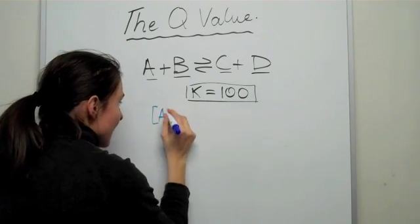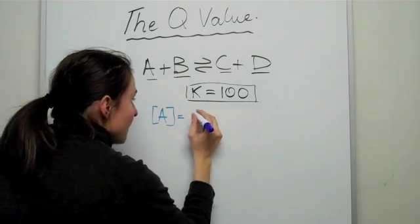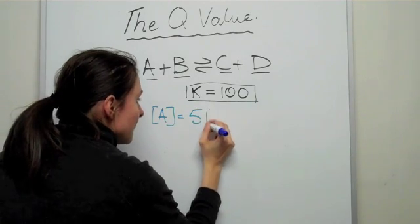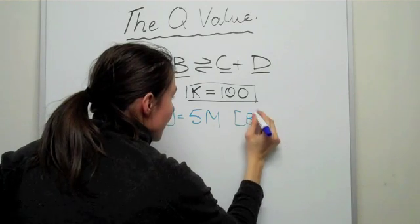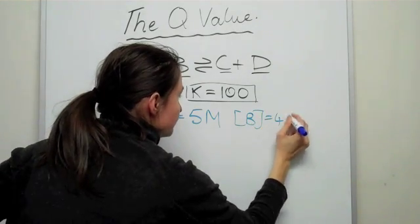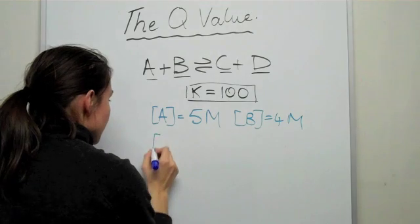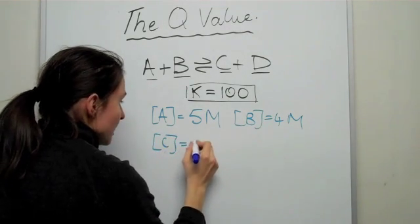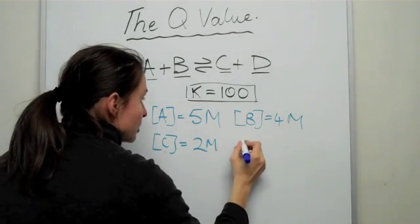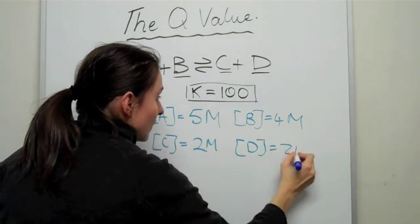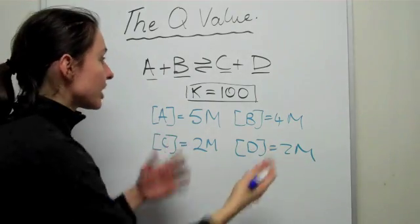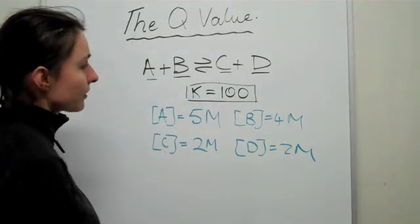Let's just say that concentration of A happened to be 5 molar. You just placed in, you decided to place in the concentration of B as 4 molar. Then you decided to put in the concentration of C as 2 molar, and the concentration of D as 2 molar.